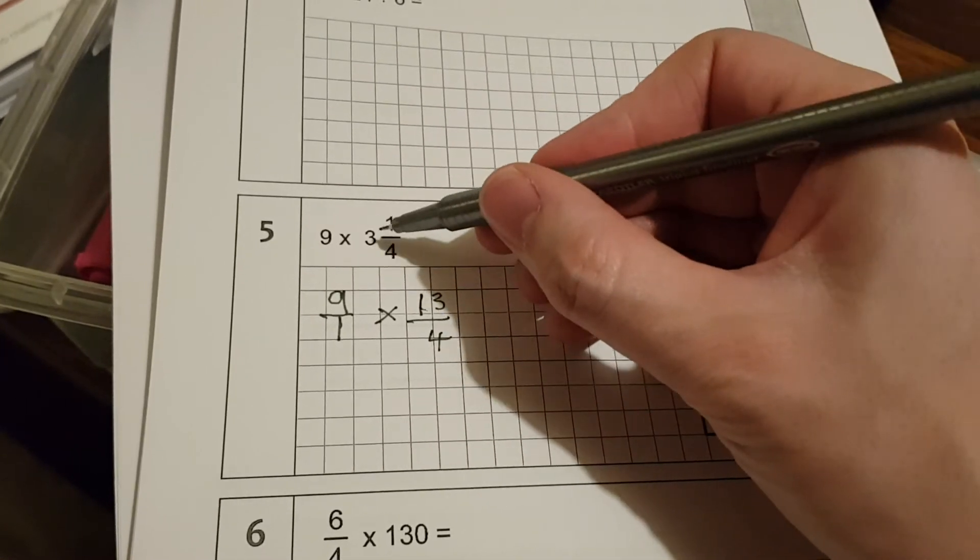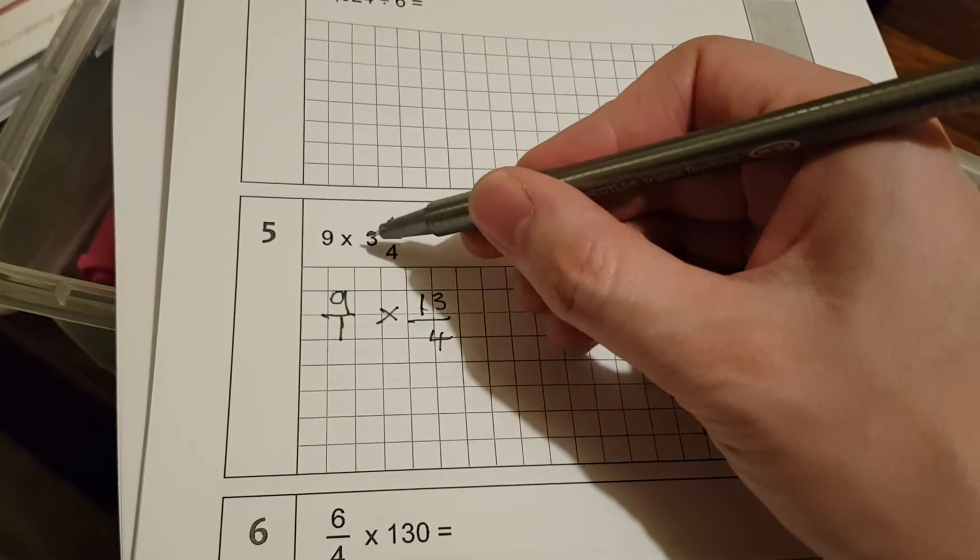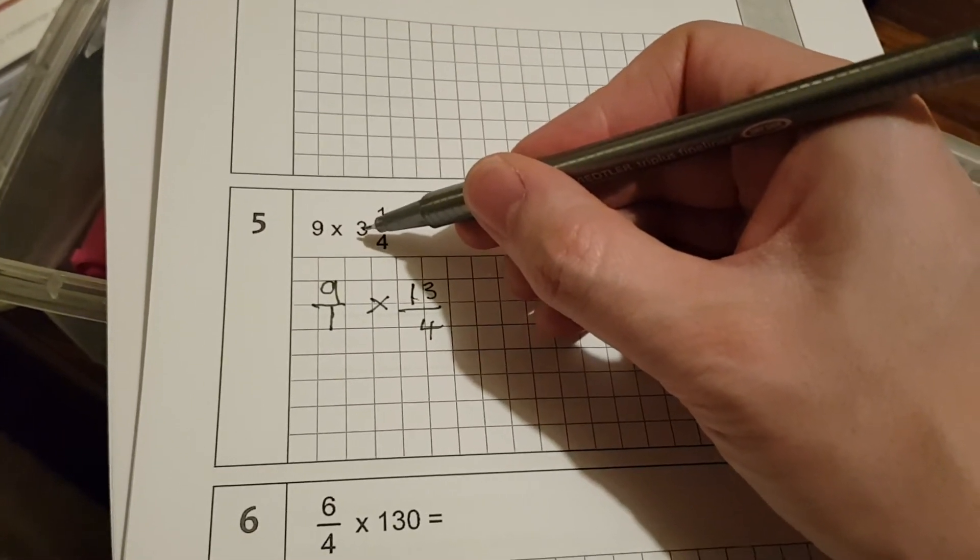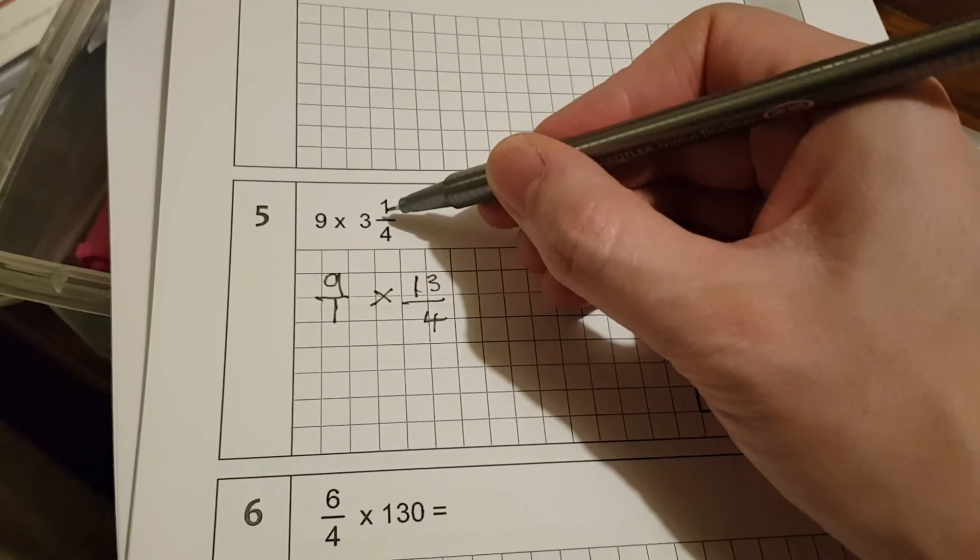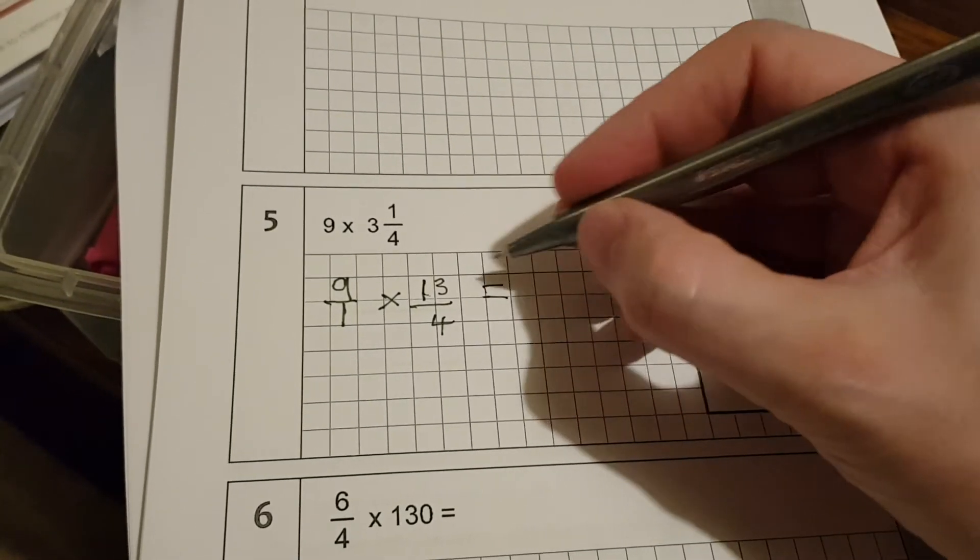Now you may do it another way, you might just do 3 times 4, add 1, but I think the way we've done in class we've always thought about what's a whole one? A whole one would be 4 quarters, so 2 would be 8 quarters, 3 would be 12 quarters, plus an extra 1 is 13 quarters. And now we just need to multiply across.